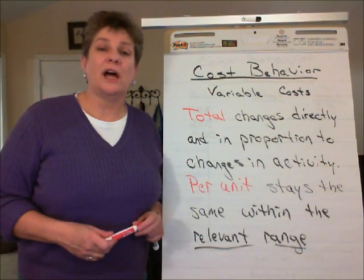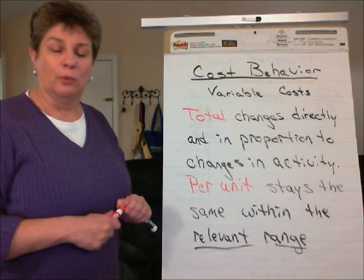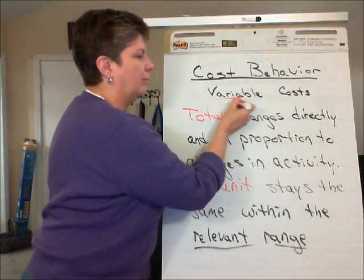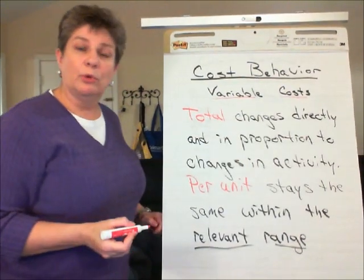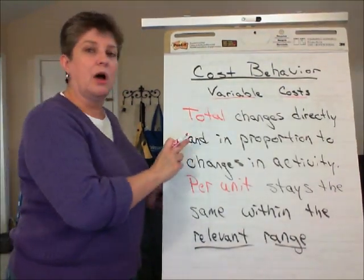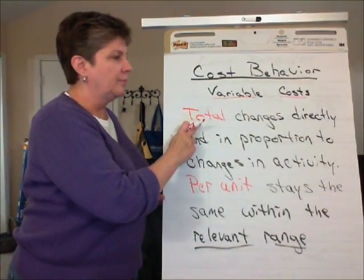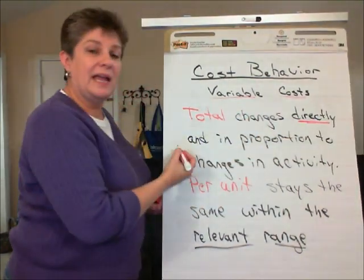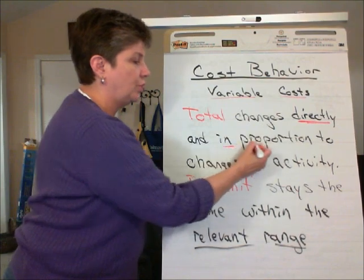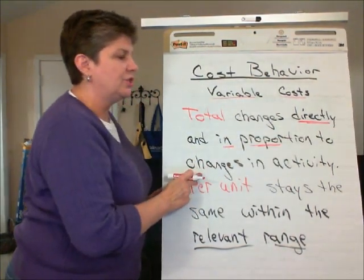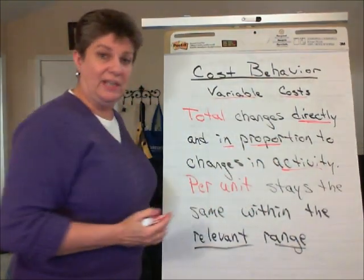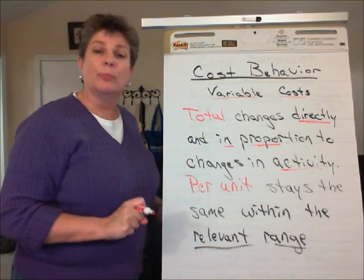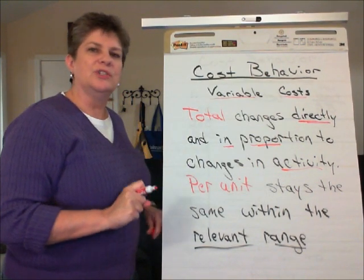One type of cost behavior is that a cost may be a variable cost. Variable costs are defined as a cost whose total changes directly and in proportion to changes in the activity. The total changes directly and in proportion to the changes in activity.